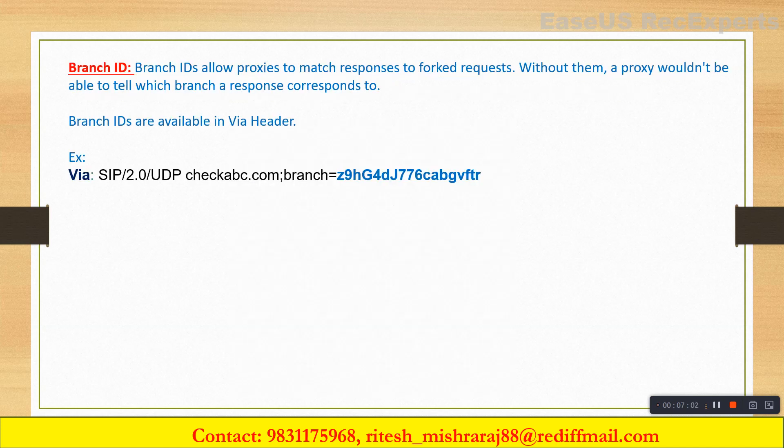Now, how does the branch ID relate to this? The branch ID is a parameter you'll see in the VIA header — it's a mandatory header. Branch ID actually allows the servers to match responses to the forked requests. Suppose an invite is being forwarded to multiple endpoints — how will the calling party or the server that forked the call understand which party has responded? That is where branch ID comes into picture.